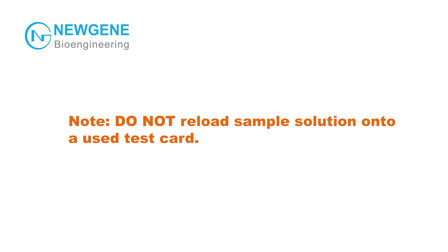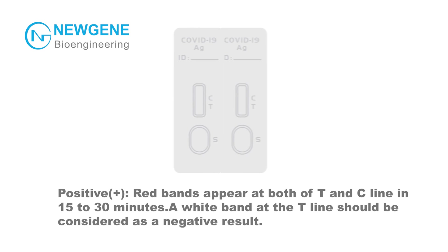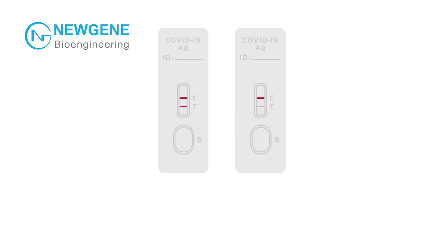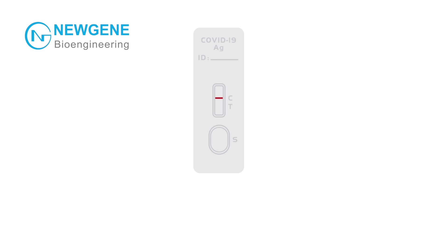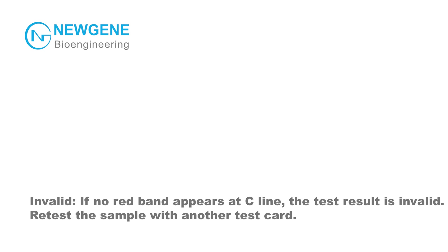Do not reload sample solution onto a used test card. Interpretation of Results — Positive: Red bands appear at both the T and C line within 15 to 30 minutes. A white band at the T line should be considered a negative result. Negative: A red band appears at the C line while no red band appears at the T line within 15 to 30 minutes after sample loading. Invalid: If no red band appears at the C line, the test result is invalid. Retest with another test card.